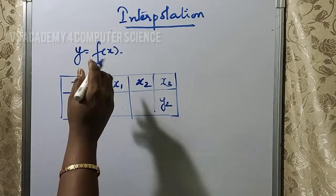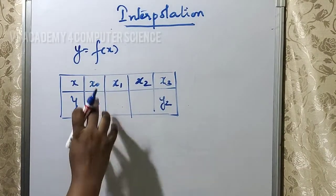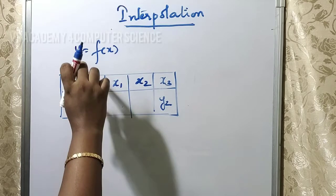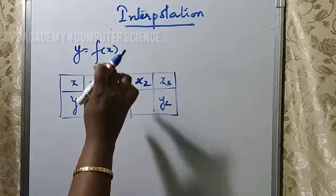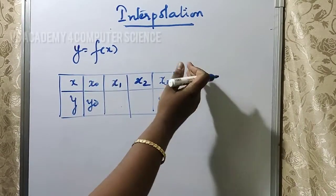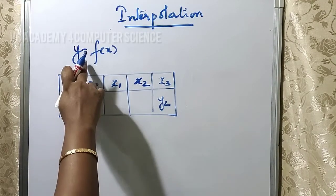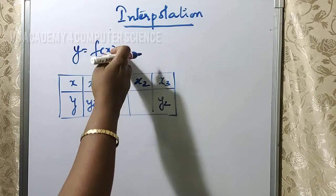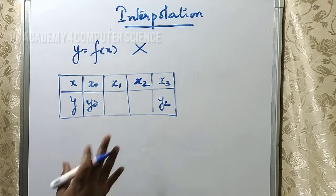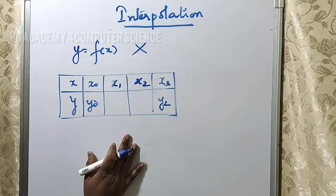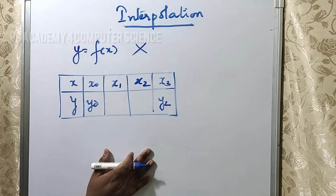If we know the equation y = f(x), we can easily find out the value of y using x, and we assume the values of x are continuous and explicitly known. If we are explicitly aware of the continuous values, we can find the intermediate values easily. But if we don't know the particular equation, how will we find the intermediate values? That is where we use interpolation techniques.